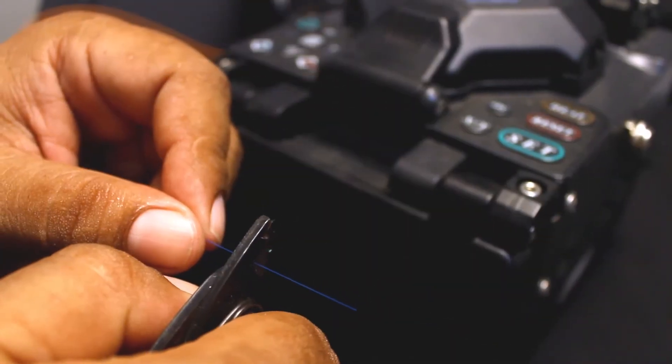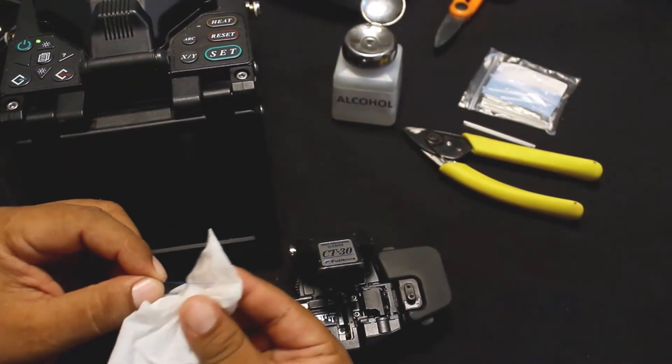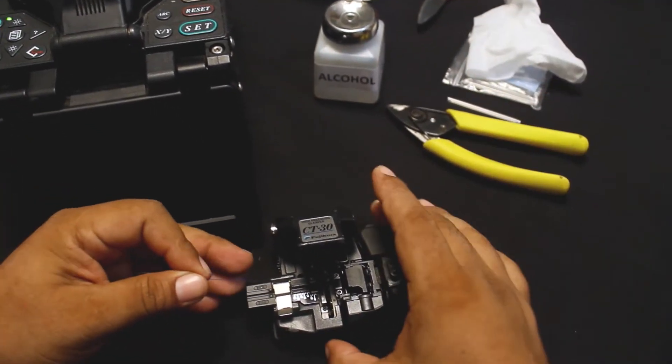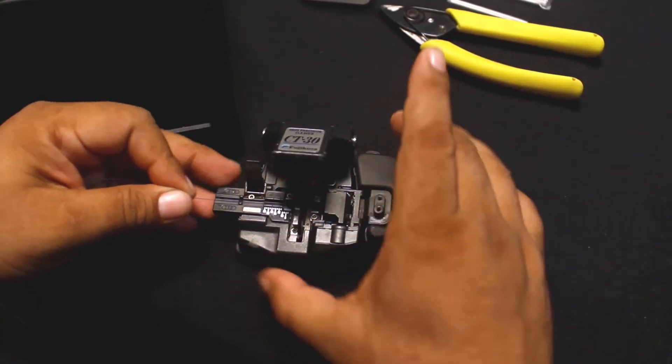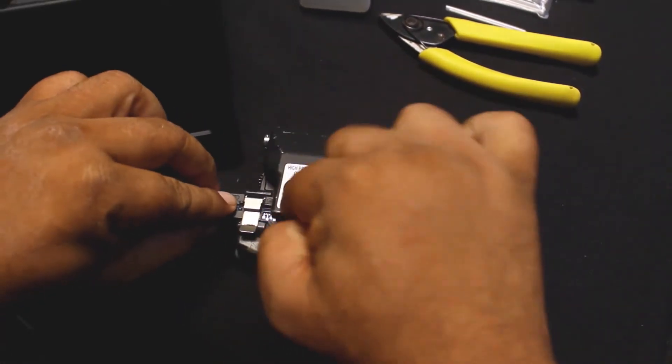Use the stripper to remove the thin buffer layer on the fiber. Once you remove the plastic, clean the fiber with an alcohol pad. Now, use the cleaver to cut the fiber at a 90-degree angle. Place the fiber on the cleaver at a measure of 17mm, hold it with the magnetic snaps, and cut.